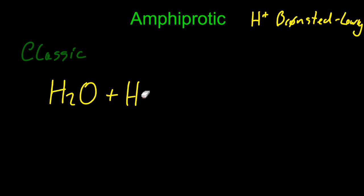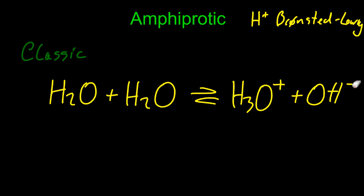The classic example from IB is two water molecules making a hydronium ion and a hydroxide ion. One water molecule has transferred an H+ to the other. So water behaves as both a Bronsted-Lowry base and a Bronsted-Lowry acid.